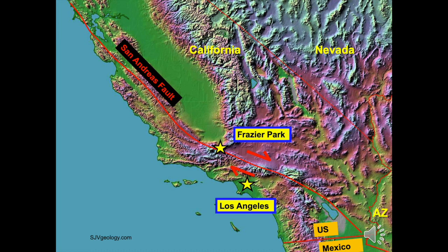This map shows a false color satellite image of central and southern California. The San Andreas Fault, outlined in red, is a prominent feature. The fault, a 700-mile long break in the Earth's crust, extends tens of miles below the Earth's surface. The town of Fraser Park, 70 miles northwest of Los Angeles, lies along the trace of the San Andreas Fault.